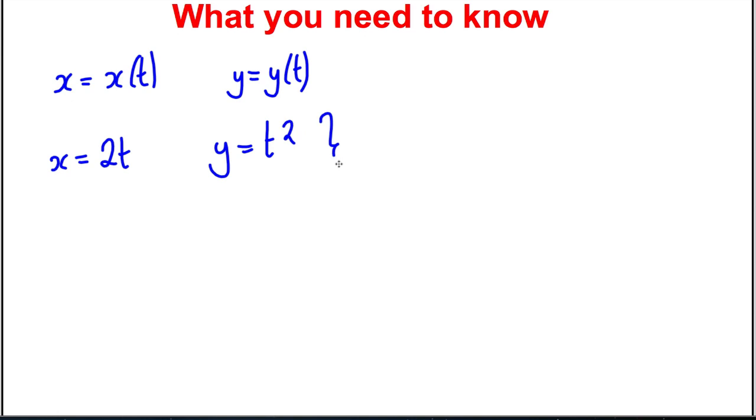Now, the pair of these together are called parametric equations, and t is called my parameter. Okay, similarly, you could have a different parameter.